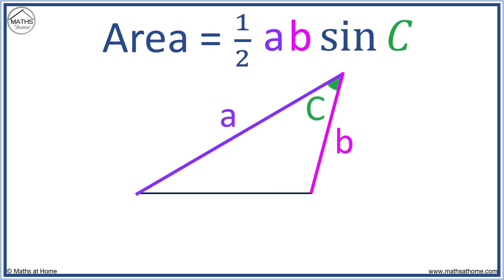For example, here we can call a = 5 and b = 4. C is the angle between them, which is 30 degrees. Therefore, the area is 1/2 × 5 × 4 × sin 30.